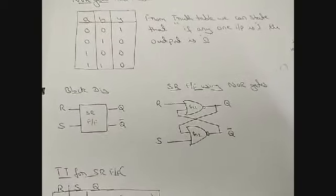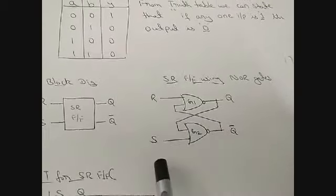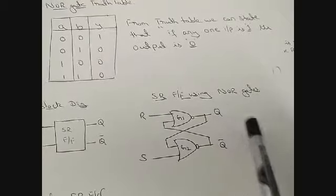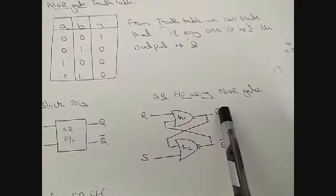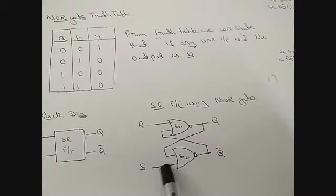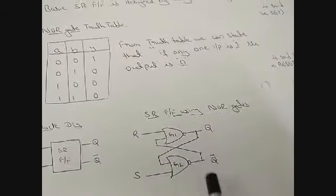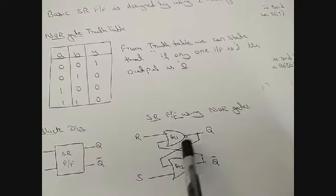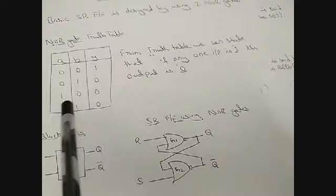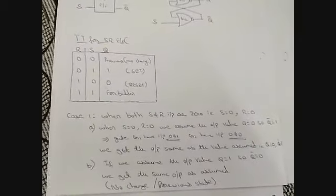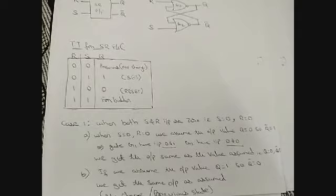Cross-checking case one with Q=1 and Q-bar=0: at G2, S=0 and Q=1 — since one input is one, output is zero, so Q-bar=0. At G1, R=0 and Q-bar=0 — both zero gives output one, so Q=1. Again the assumed values hold. Therefore, for zero-zero, the flip-flop remains in its previous state regardless of whether Q was 0 or 1.